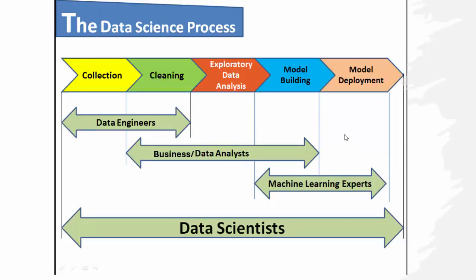As you see here, in the whole data science process, first we collect the data. There are various ways to collect the data. One of them is through the questionnaire — that is a very simple process everybody knows. Another is sensor-generated data; sensors in machines automatically generate data. Also through software, web applications, or mobile applications we collect data. So there are various sources of collecting data.